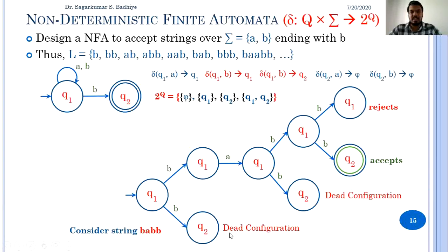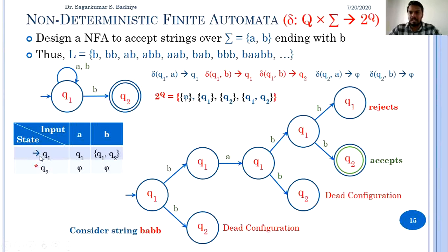If all transitions reject the string, then the string is rejected by the NFA. If any transition reaches the final state, then the string is accepted by the NFA. So the string BABB is accepted because there is one possible transition that ends in a final state. This NFA can be represented by a transition table where q1 is the initial state: q1 on A goes to {q1}, q1 on B goes to {q1, q2}. In q2, the final state, on reading A or B there is no transition — it is phi, an empty transition. We will stop here and in the next class we will cover the difference between NFA and DFA. Thank you.